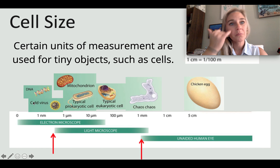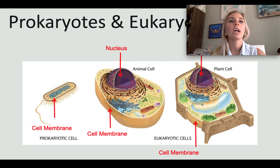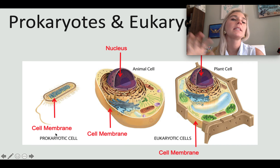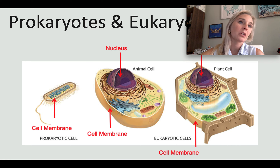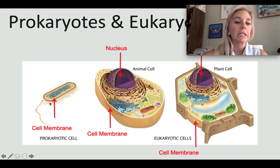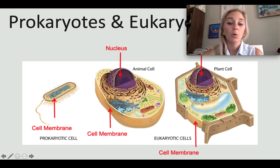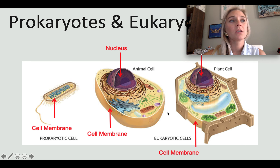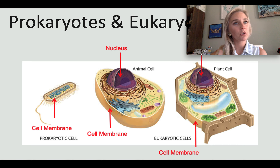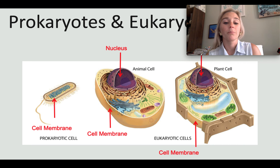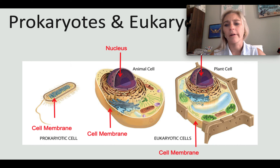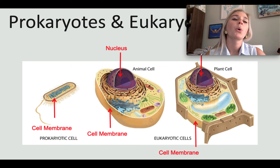Prokaryotes have no nucleus and no specialized organelles. They are very small and normally unicellular — bacteria are an example. Eukaryotes, like plant and animal cells, do have a nucleus and membrane-bound organelles, and are mostly multicellular. Although prokaryotes are simpler, they can still carry out all the functions of life.